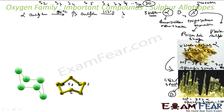If you heat the sulfur further, you get lambda sulfur, also called plastic sulfur. At 369 Kelvin or 96 degrees Celsius, both alpha and beta sulfur are stable — this is the transition temperature where alpha-to-beta conversion takes place.